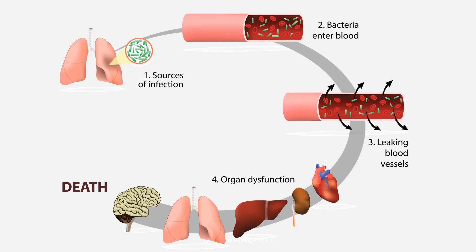You see this diagram here and it starts out at the top with number one. We have some source of infection — here we're going to be talking about bacteria. Sepsis can also be caused by viruses and by fungi as well. In this case, we're talking about bacteria. It looks like it's the lung, and probably a pneumonia. That leads to the bacteria entering the blood.